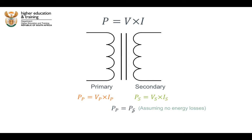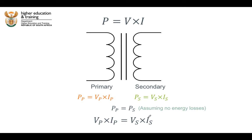If that is the case, then we have this very important equation emerging: the voltage across the primary coil multiplied by the current through the primary coil is equal to the voltage across the secondary coil multiplied by the current through the secondary coil.